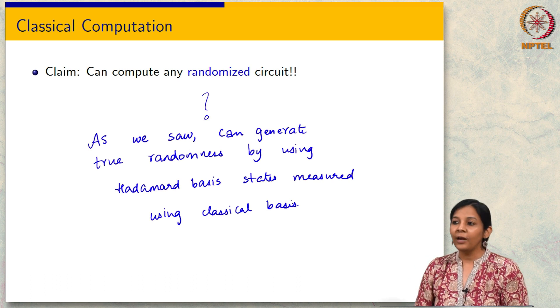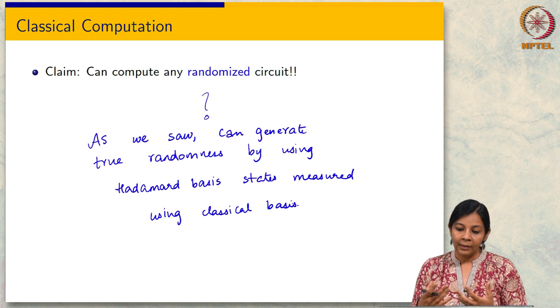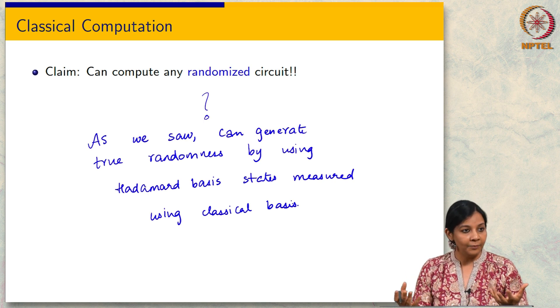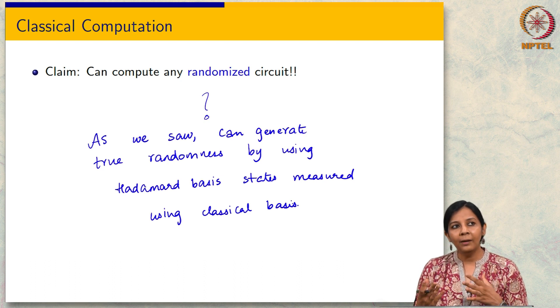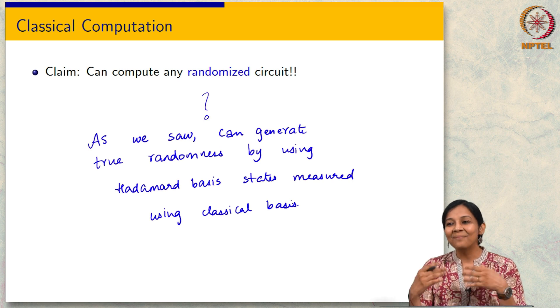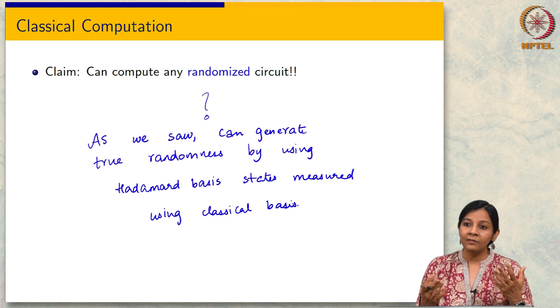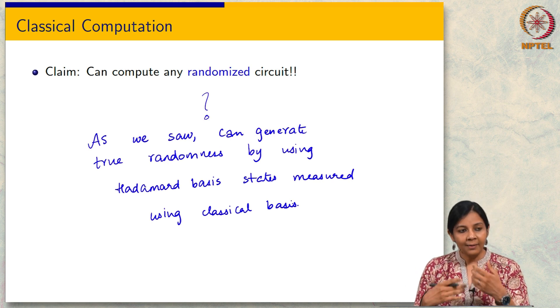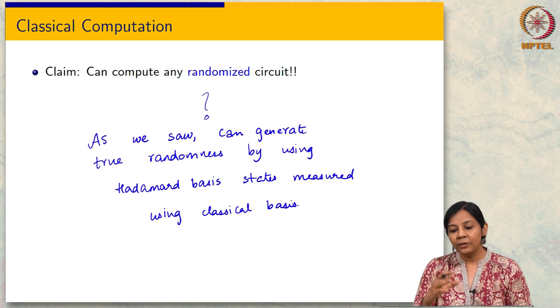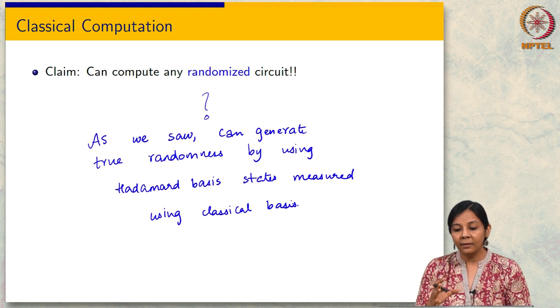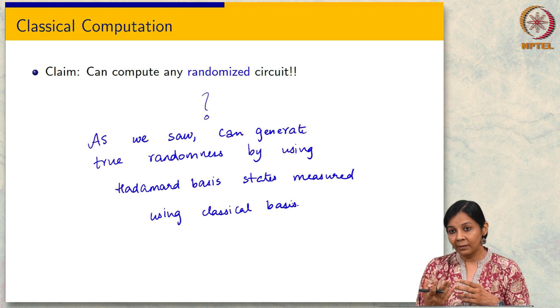Yes it is true. For any random process a quantum circuit is sort of just naturally more well fitting because inherently there is randomness built into it which in the classical setting you do not have. In that sense it is true. I was hesitating a little bit because in classical computation also this randomness generally so far as we know does not really give us more power. We get this randomness by running pseudo random generators and so on, but I do not know of any examples where the randomness or the randomized circuit is computing something beyond what a deterministic circuit can compute.